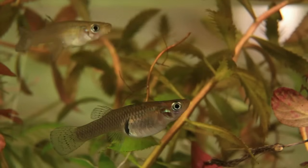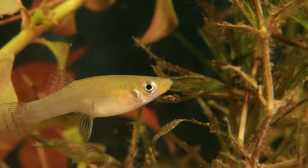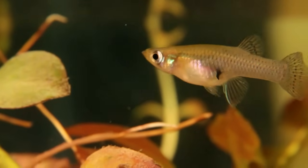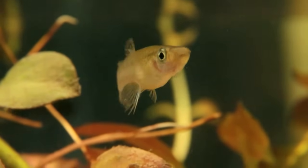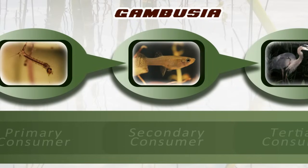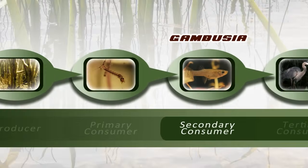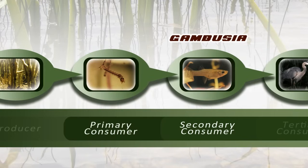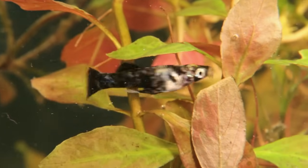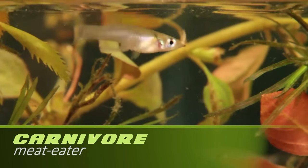The Gambusia, on the other hand, loves mosquito larvae. This is why we also call him the mosquito fish. We'll stick him in the third link of our food chain. The Gambusia is what we call a secondary consumer — animals that eat primary consumers. Because the Gambusia mostly eats other animals, he can be classified as a carnivore.